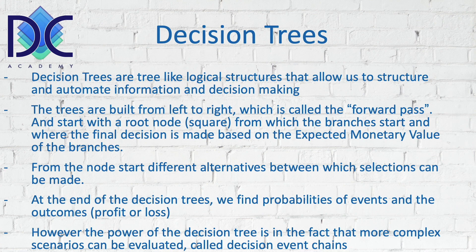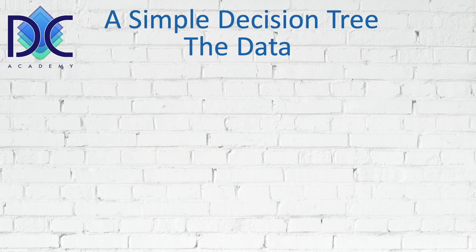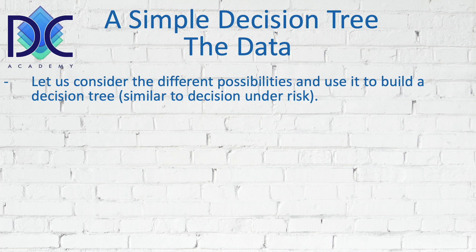We can extrapolate the decision tree into a more complex decision-making model with complex scenarios — these are called decision event chains — where one output may lead to a specific decision. We have to find the combination of all possibilities that gives the best result. For a simple decision tree like the one we'll examine, it is very similar to decision making under risk and would give the same result.